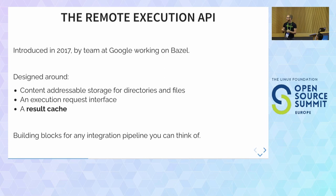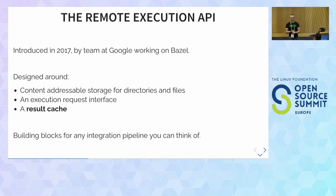The other thing the RE API standardized is a way to request builds from a build farm and to have a shared results cache — shared meaning it could be on one server and you pull things to another machine. These are the building blocks of a lot of different integration pipelines.